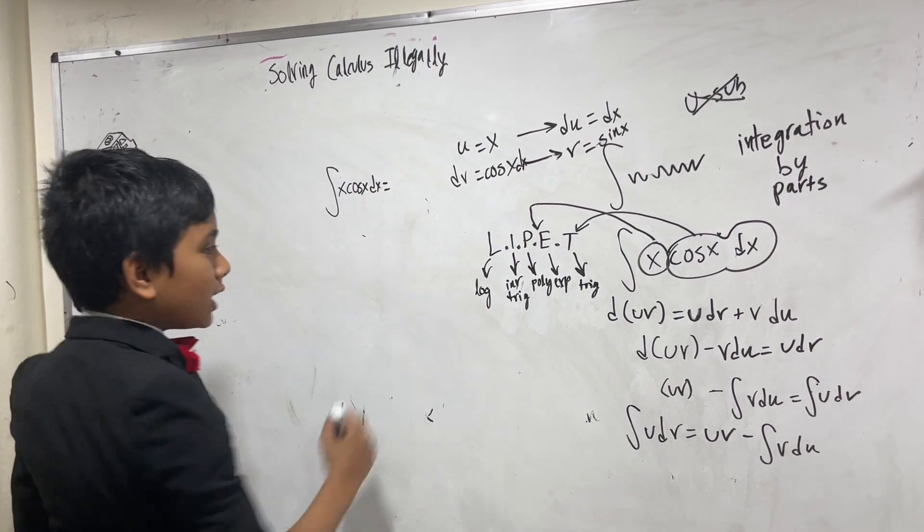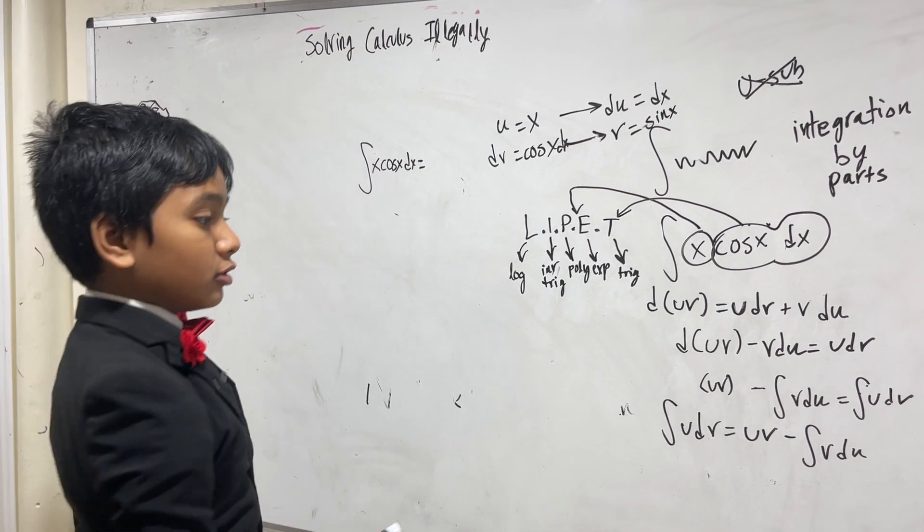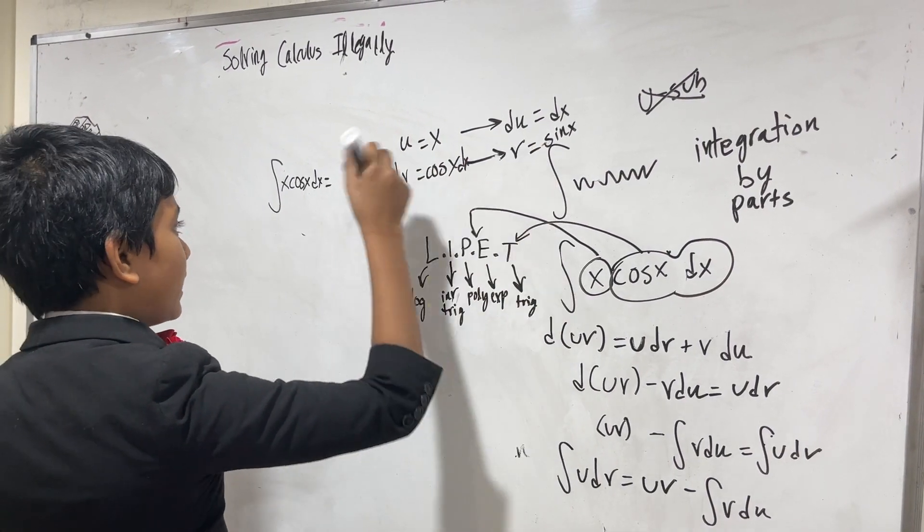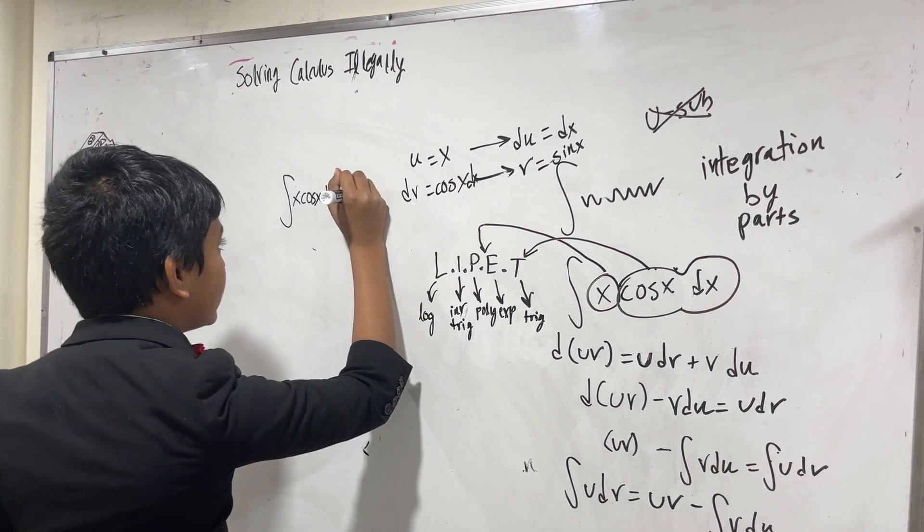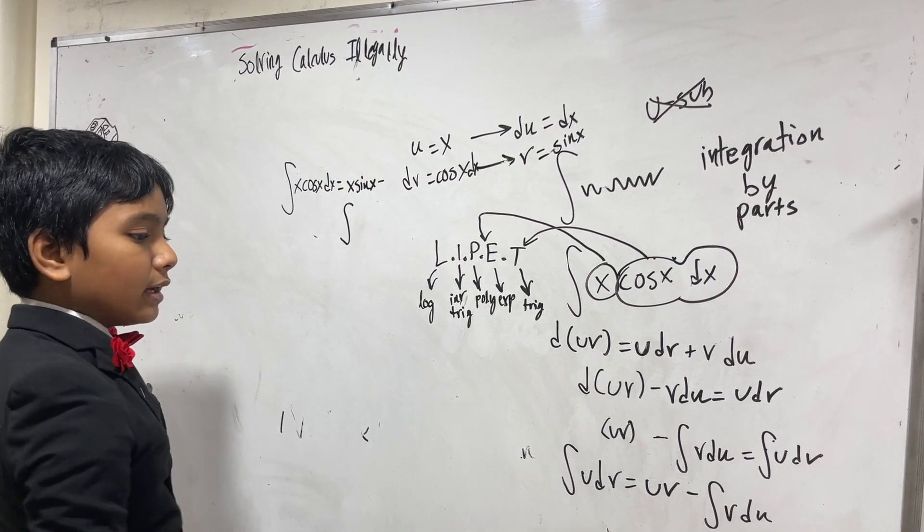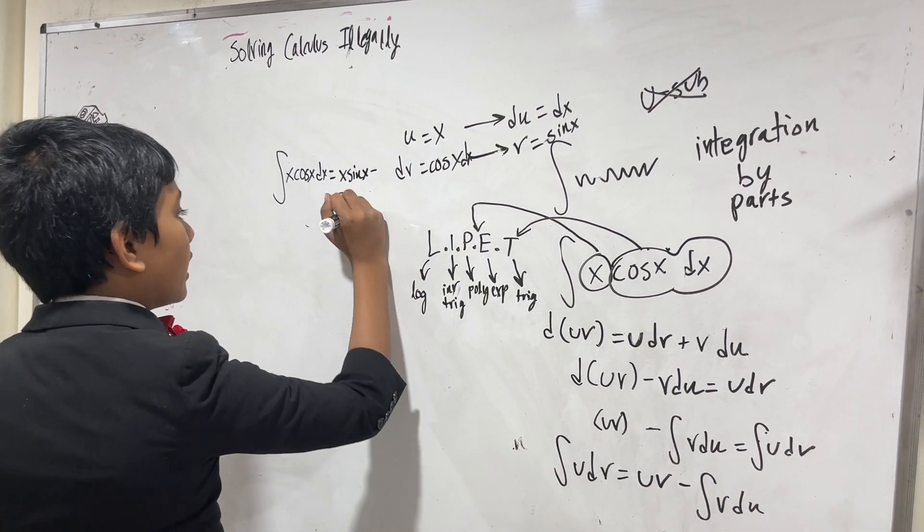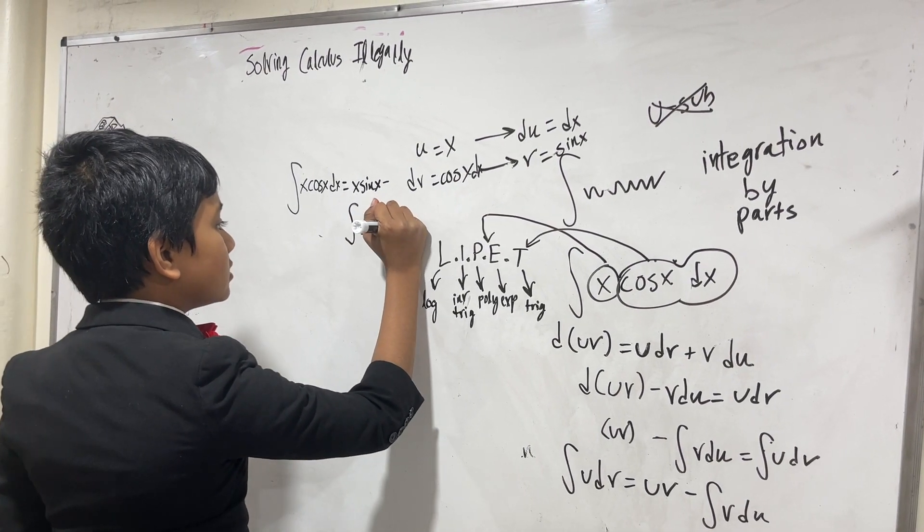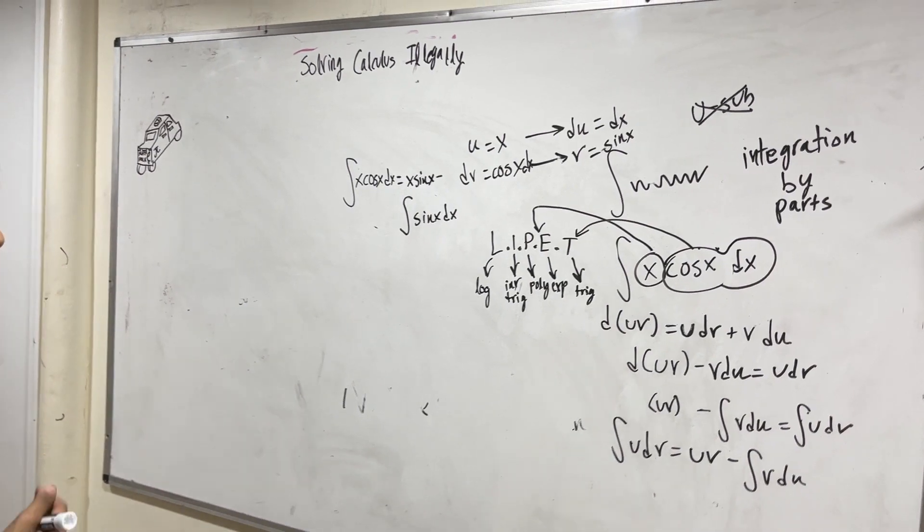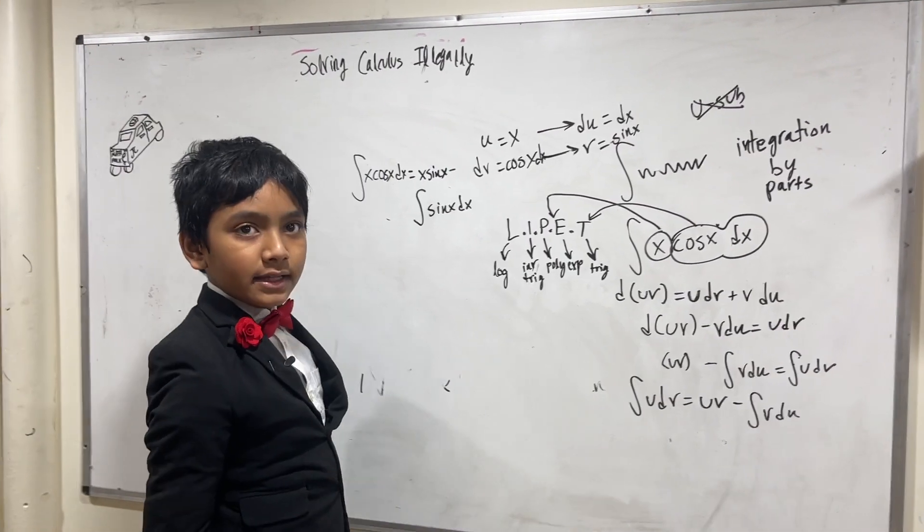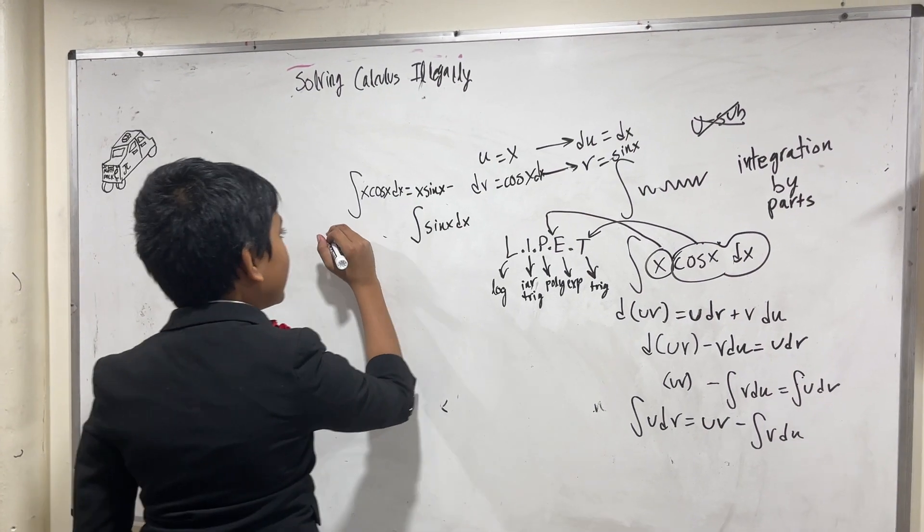The integral of x cosine x dx is equal to u times v. What is u? X. V is sine x. We get x sine x minus the integral of v du, sine x times dx.